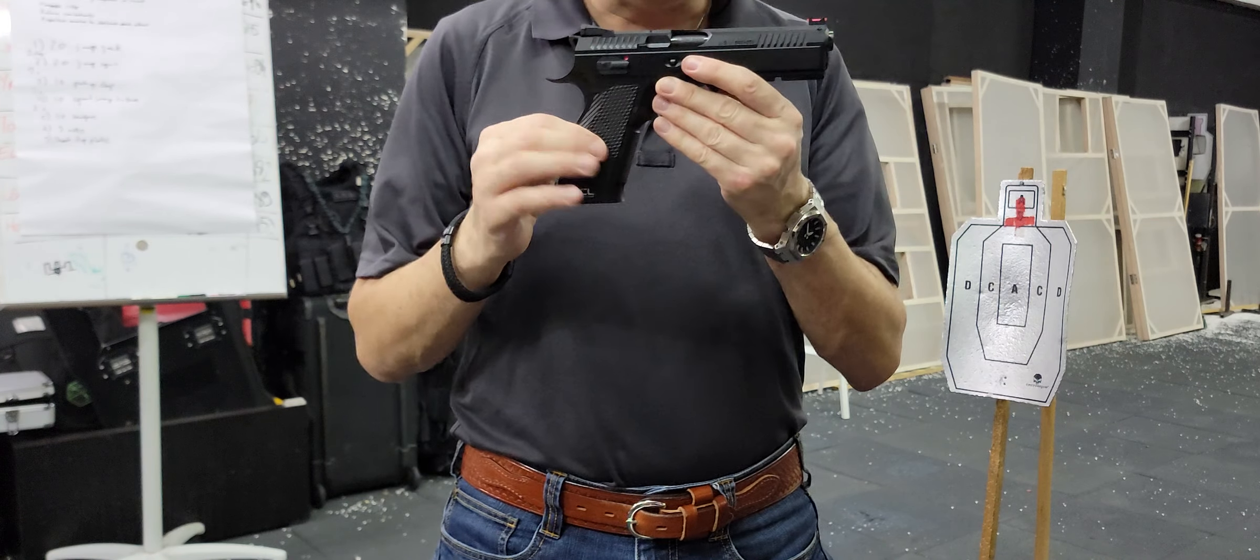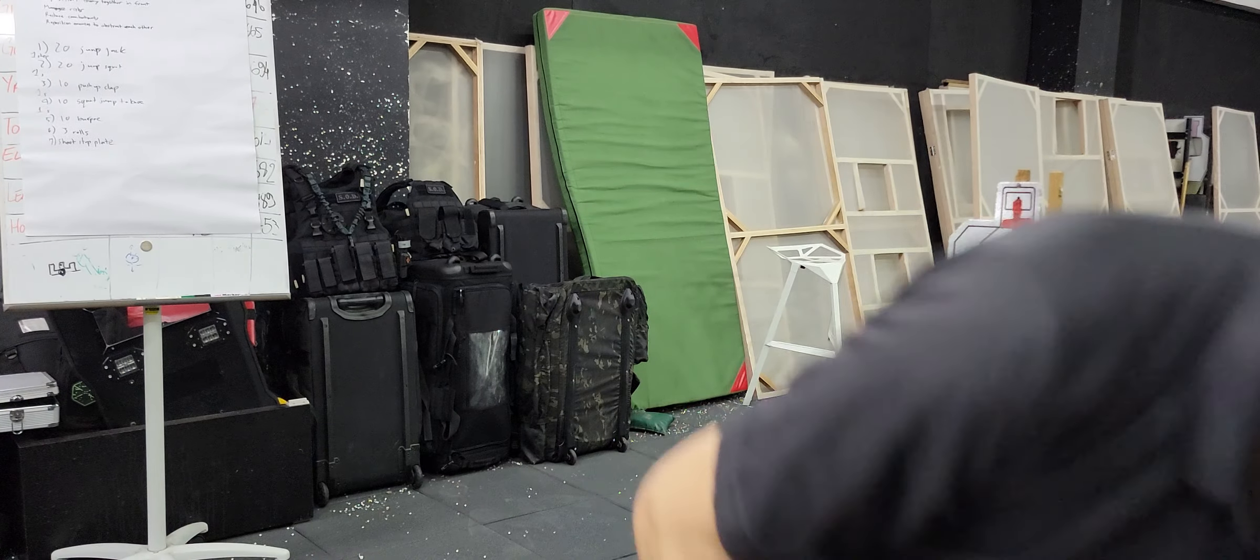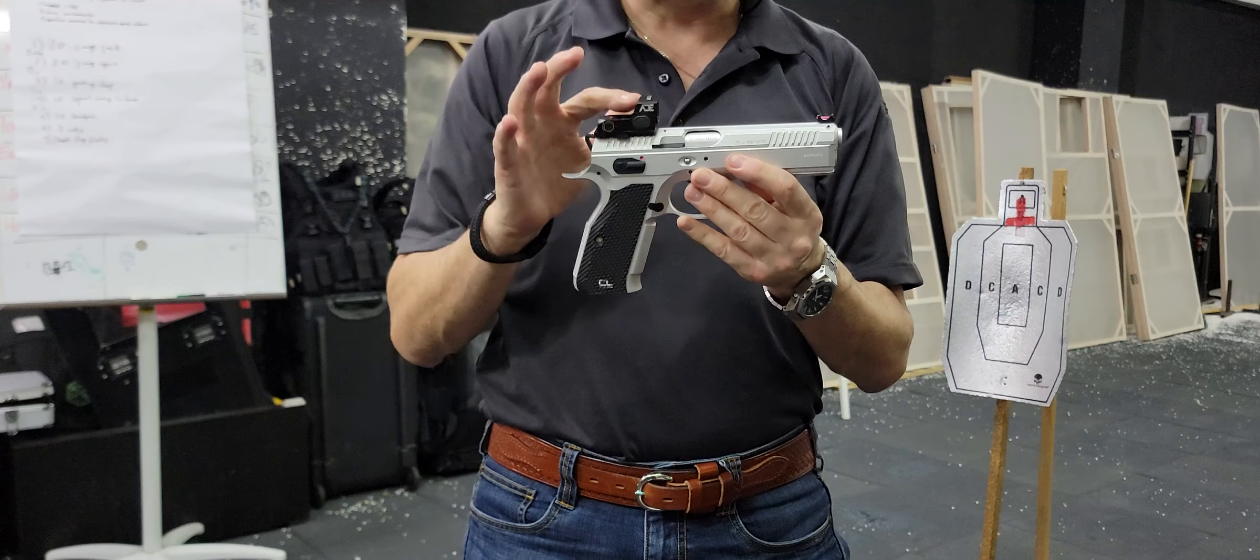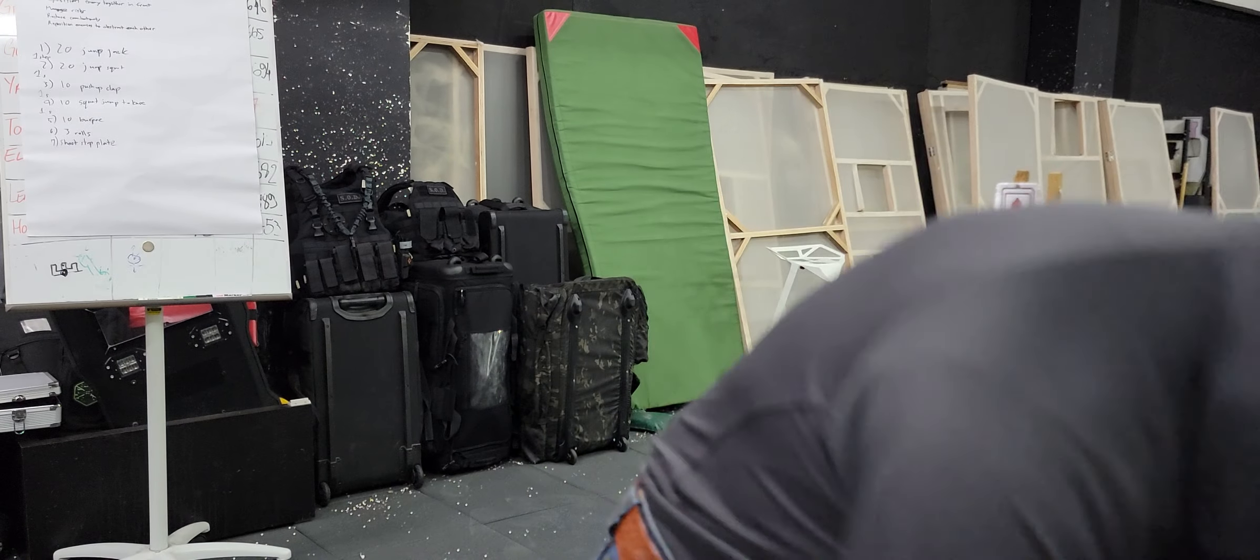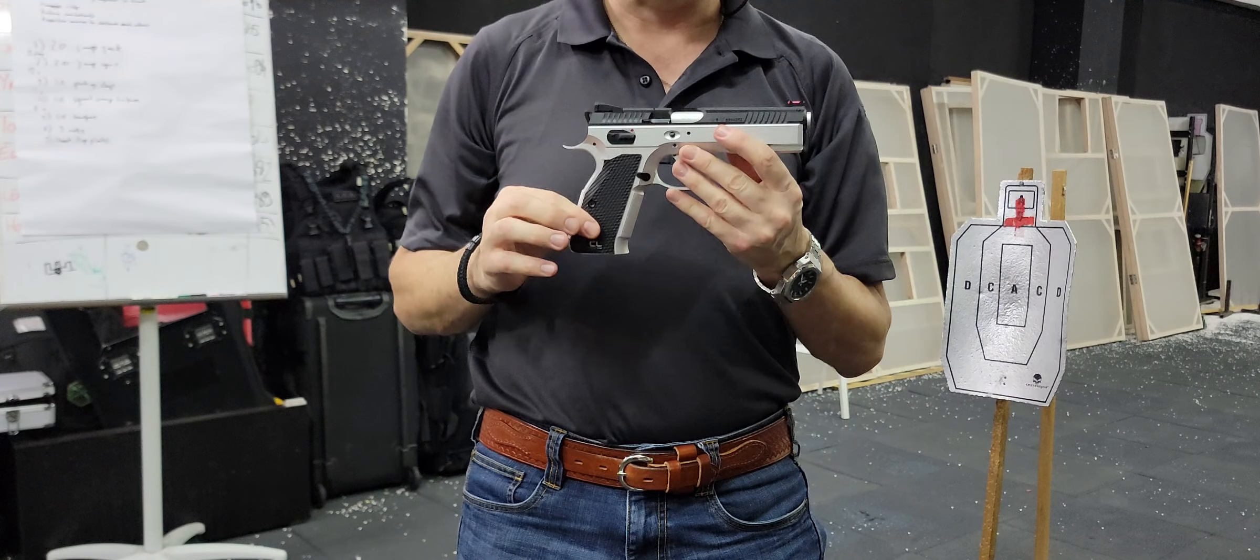So we have this black one, we have this silver one with a red dot sight, and we have this two-tone one.